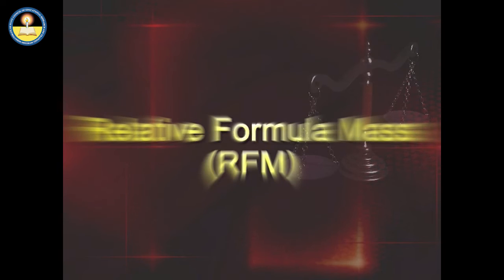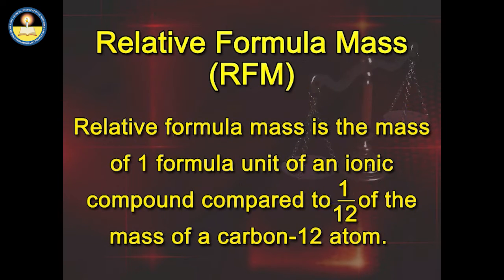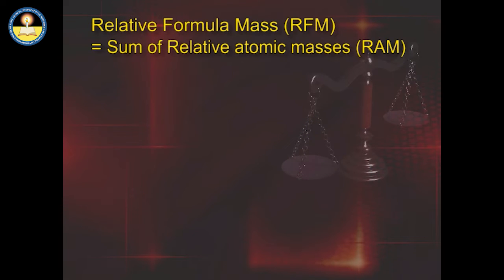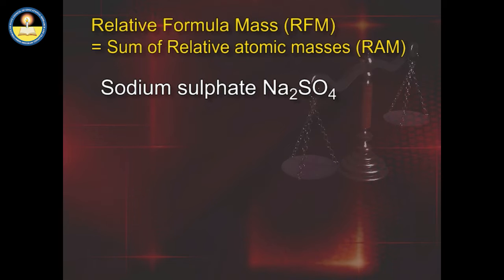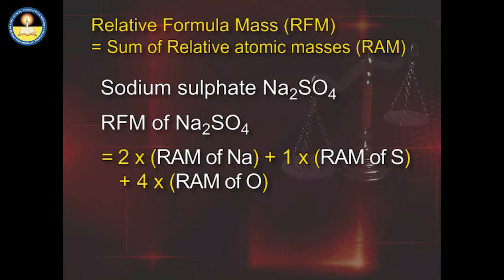We will now learn about Relative Formula Mass or RFM. Relative formula mass is the mass of one formula unit of an ionic compound compared to 1/12 of the mass of a carbon-12 atom, and RFM equals the sum of relative atomic masses. For sodium sulphate: RFM equals 2 × RAM of sodium plus RAM of sulfur plus 4 × RAM of oxygen, which equals 2 × 23 plus 32 plus 4 × 16, equaling 142.